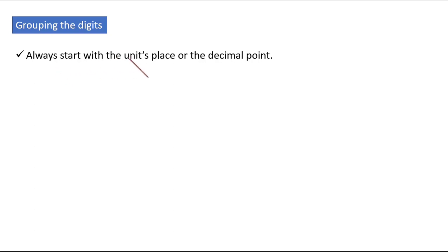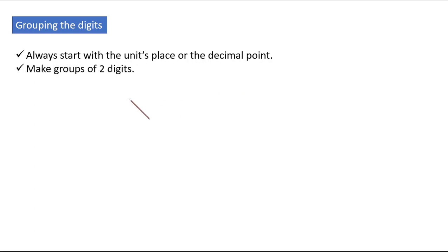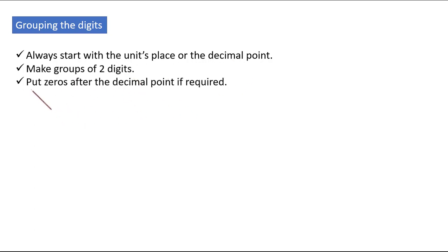Always start with the units place, or always start from the decimal point. Make groups of two digits. Put zeros after the decimal point if they are required.